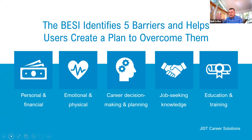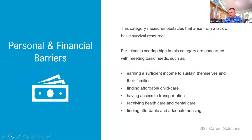The BESI identifies five barriers: personal and financial, emotional and physical, career decision-making, job seeking knowledge, and education and training. Personal and financial barriers are often the most immediate — the day-to-day concerns. This is about earning a sufficient income, finding affordable child care, having access to transportation, and all those other day-to-day things that can get in the way of finding and keeping a job. These are issues people being released from incarceration are going to have as well.